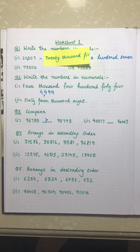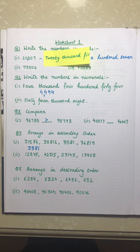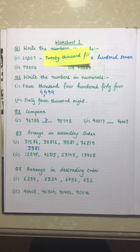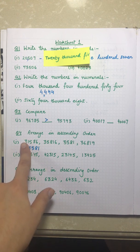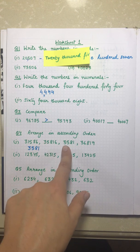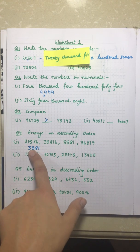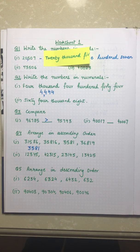Now let's look at question number four, which says arrange the numbers in ascending order. In the first part we have around four numbers given to us. The first thing we check is which number has the fewest digits, as that will be the smallest.